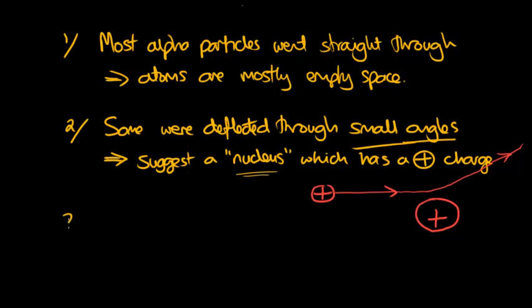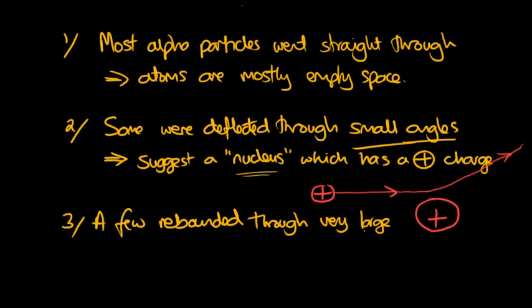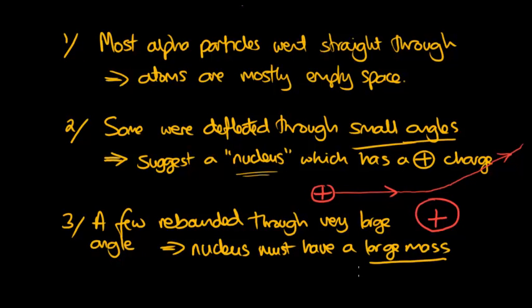Number three. The most surprising observation was that a few rebounded through very large angles. In fact some of them came straight back. And so this meant that the nucleus must have a large mass and a very positive charge.